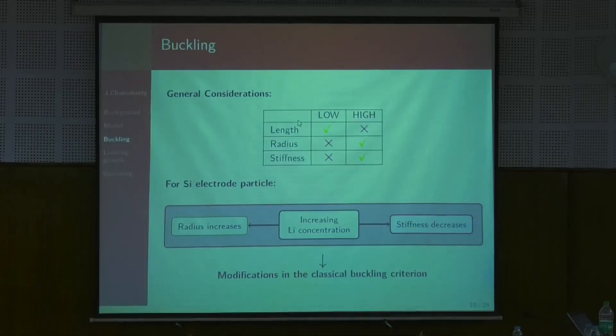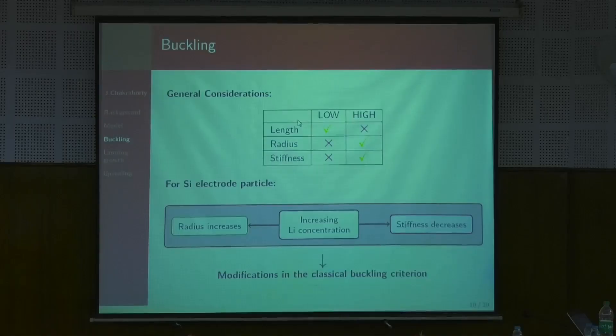How does this connect with lithium diffusion? When lithium infuses into the cylindrical particle, the radius also increases because the volume is increasing — so the cylindrical particle is becoming fatter, which in a way makes it safer against buckling. But at the same time, because of the infusion of lithium, the Young's modulus is also becoming less. A decreasing Young's modulus is dangerous for buckling because it makes the cylindrical particle effectively less stiff.